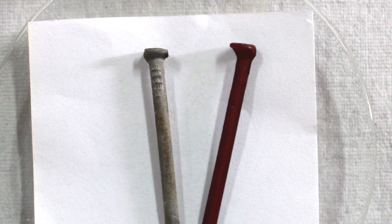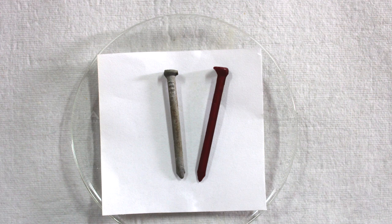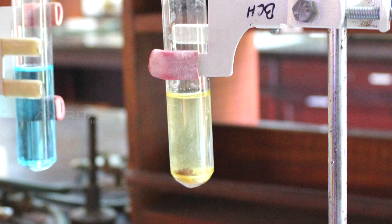The colour of the copper sulphate solution in which the iron nail was dipped changes from blue to green, whereas the colour of copper sulphate solution in the other boiling tube remains the same.